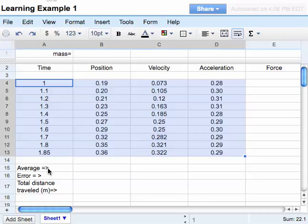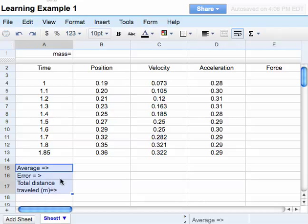And this information at the bottom, where it says average error and total distance traveled, I'm going to click on those, highlight that little block, and I'm going to right justify this piece of information. So now it's all justified.